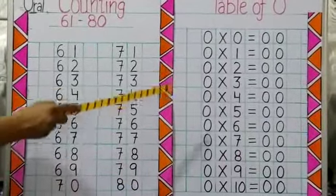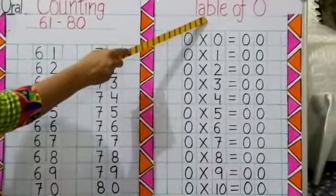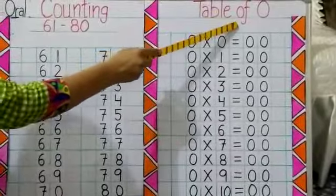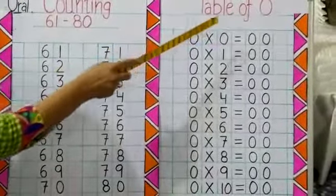So now let's start with the revision of table of 0. So let's start.